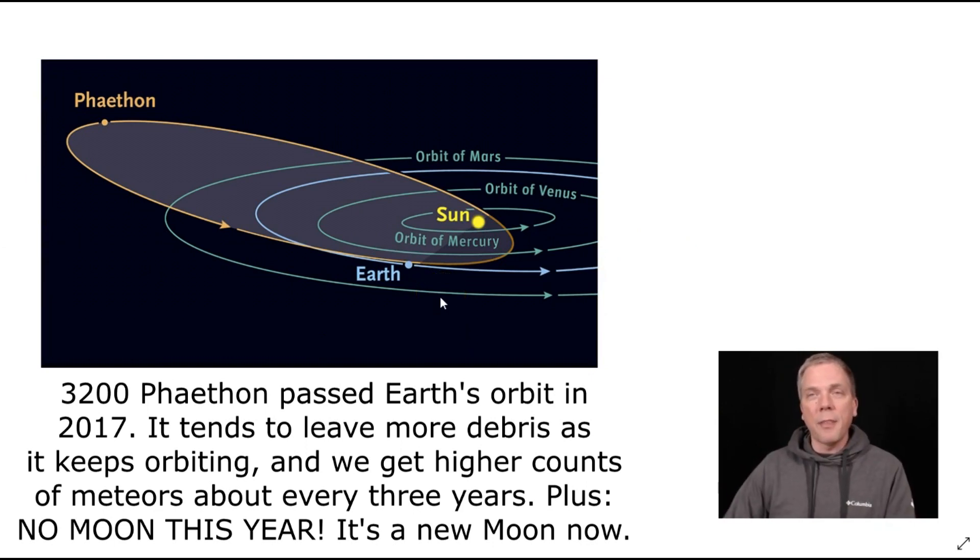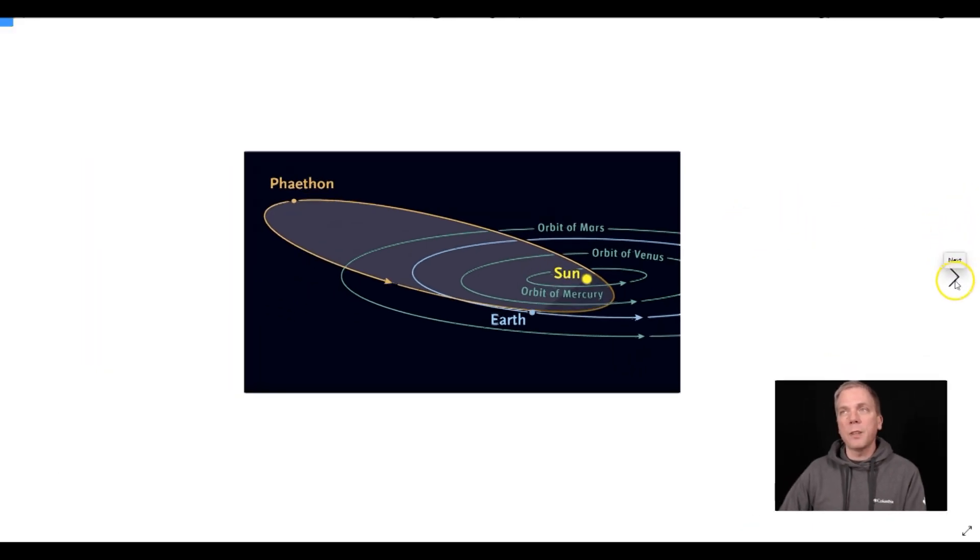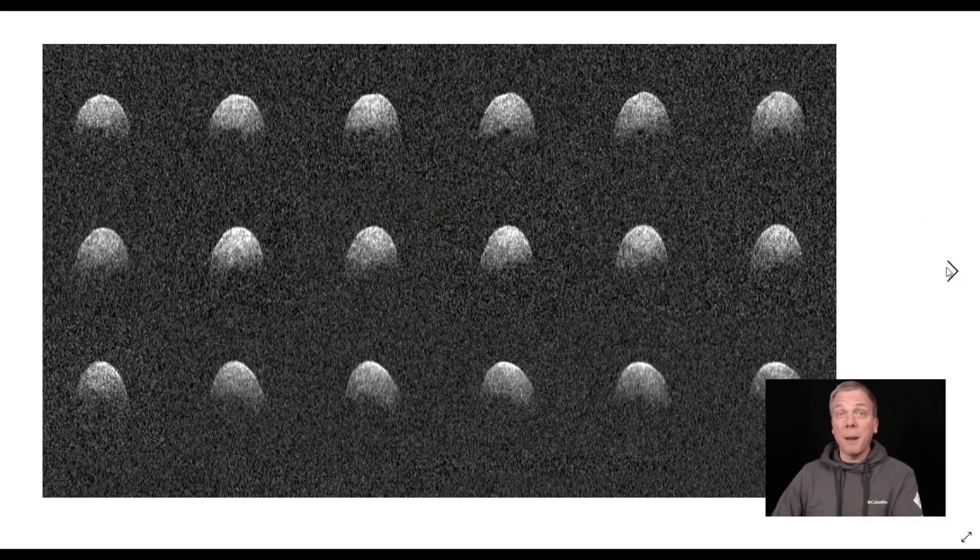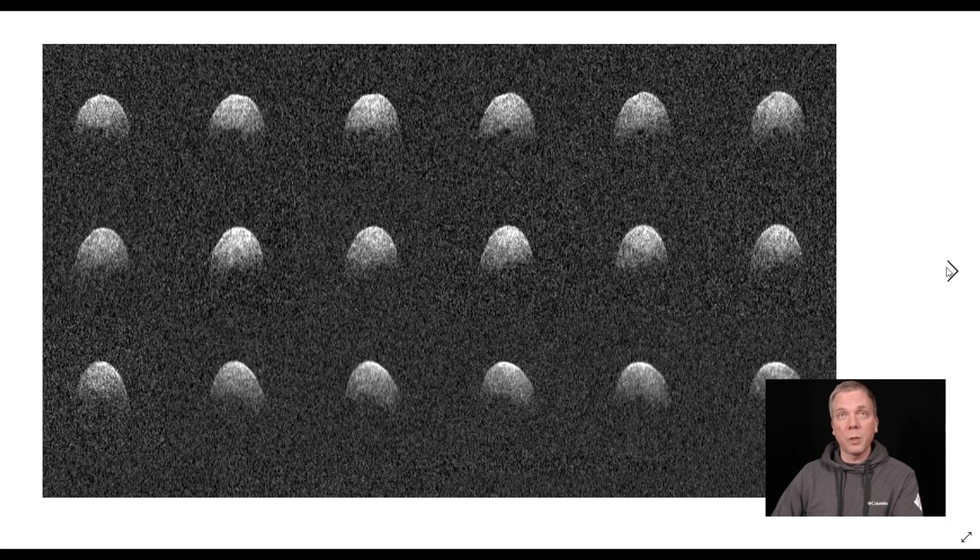Now this particular object is kind of interesting, and this was taken by the Arecibo radio observatory, which unfortunately just had a catastrophic incident which means they're going to be closing it down. So we were fortunate we have these. But these are basically different radio images of how this particular asteroid looks, and it's about 5.8 kilometers in diameter. So it's decent sized but still small for us to be able to see.